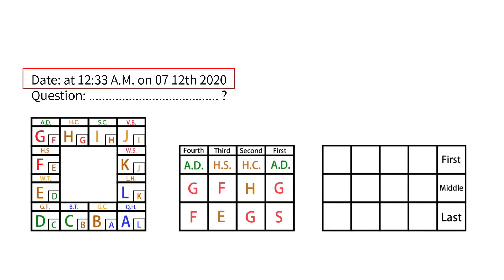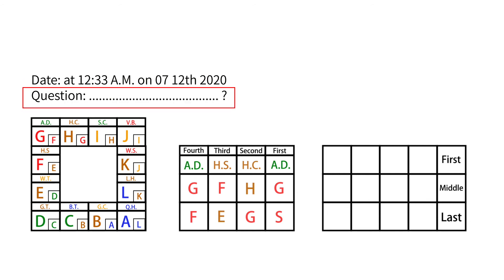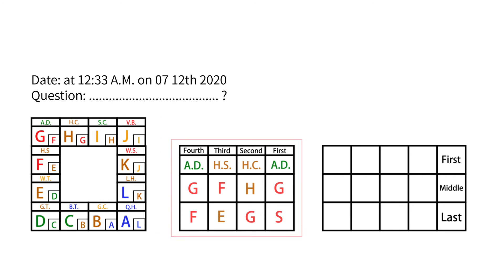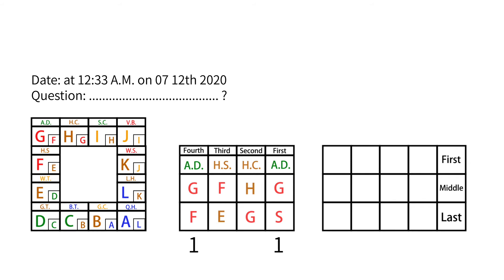In the first example, there are only three lessons — one, two, three. None of the four lessons has a restriction relationship, and the above four symbols have no restriction relationship with the symbol below the first lesson.